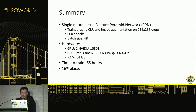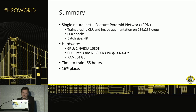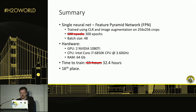To summarize: our model was just a single neural net while our competitors used ensembles of several models. We trained it using a cyclic learning rate, image augmentation, and random crops. We trained for 600 epochs with a batch size of 48, using two NVIDIA GPU cards, one Intel CPU, 64 gigabytes of RAM, and it took 65 hours to train. After the competition ended, I adjusted the learning schedule and found we could have ended up at 300 epochs — about half the time.